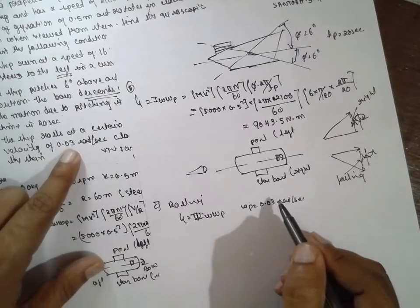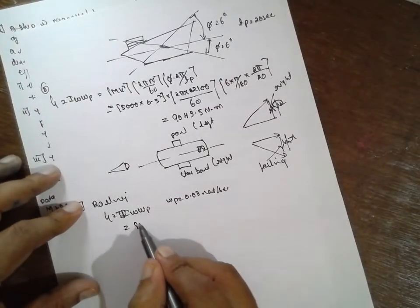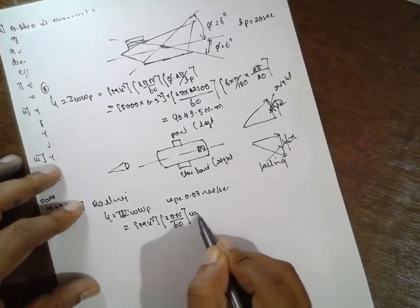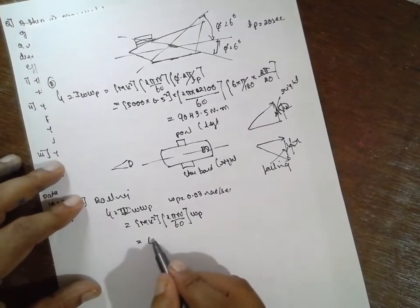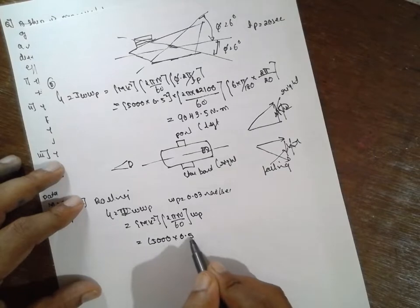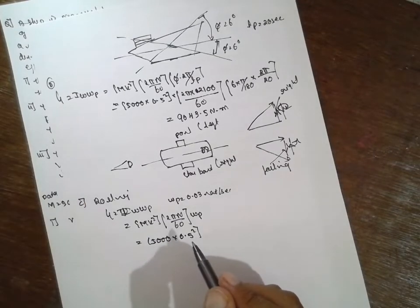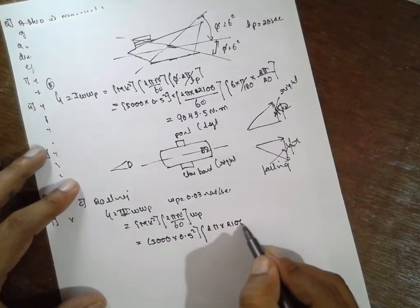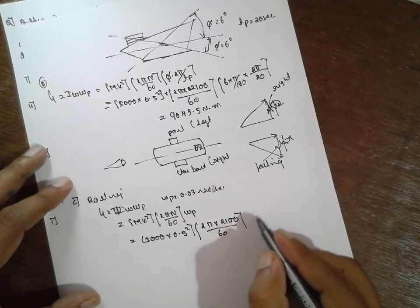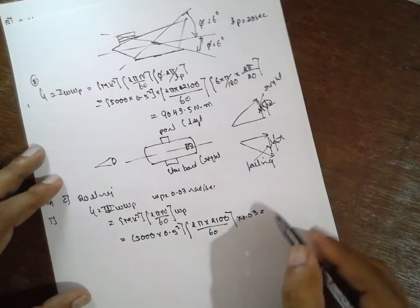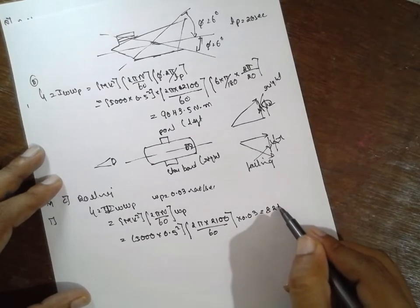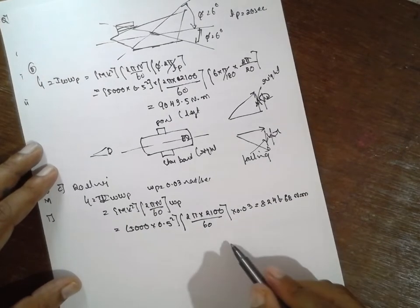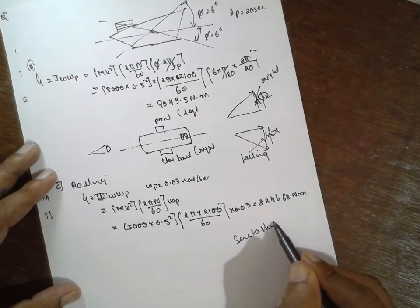G is equal to I omega omega_P. Omega_P is given as 0.03 radian per second. Where I is nothing but M K square 2 pi n divided by 60 into omega_P. M is nothing but 5000 into 0.5 square, 2 pi into 2100 divided by 60 into 0.03. Answer will be 8246.68 Newton meter. I am Santosh Gaidankar, thank you very much.